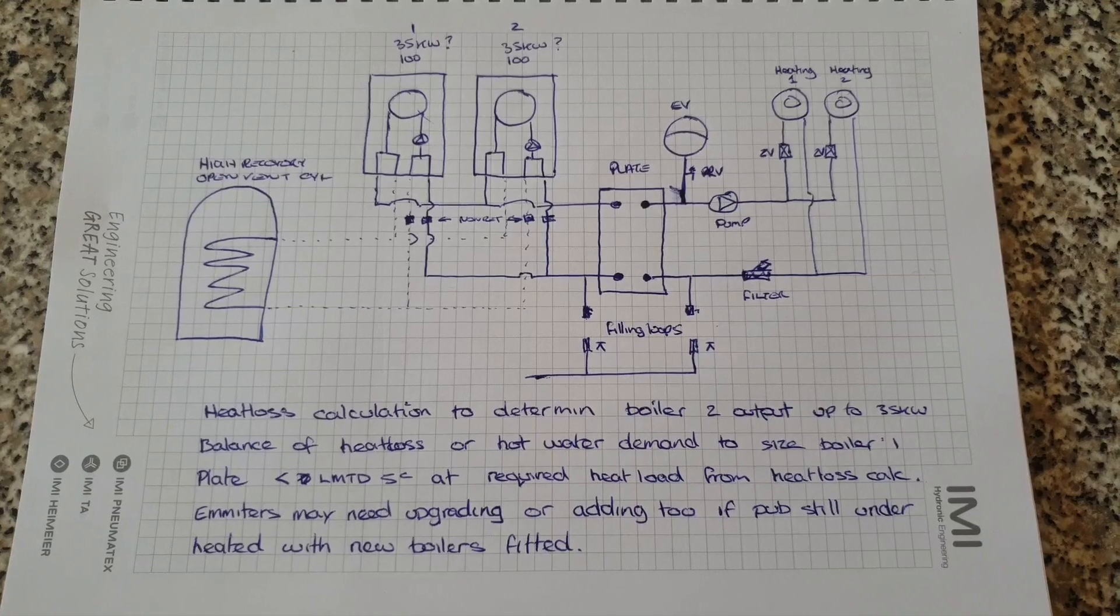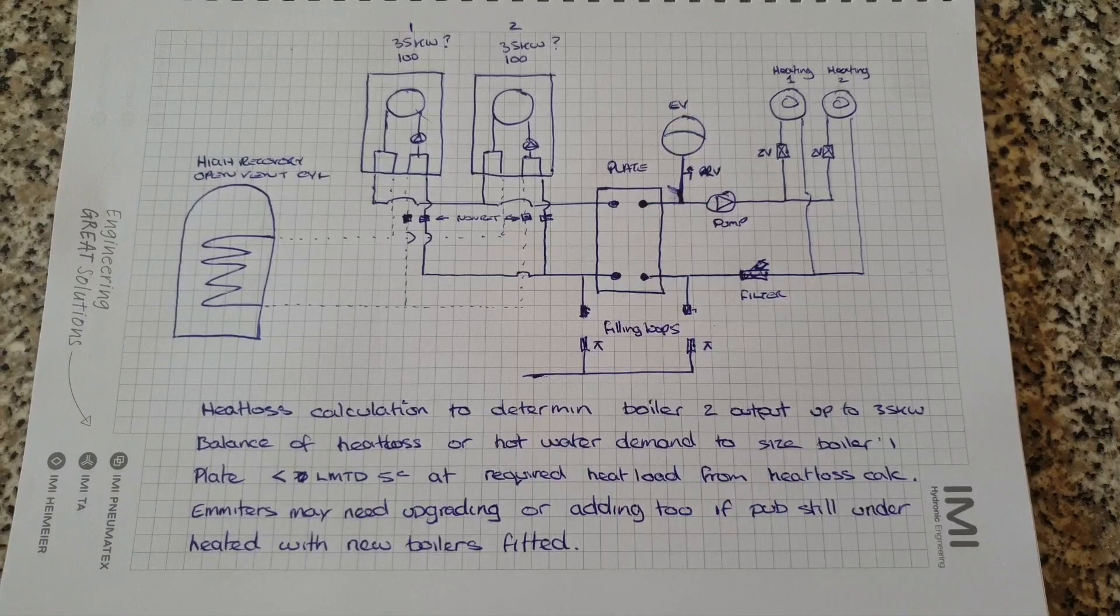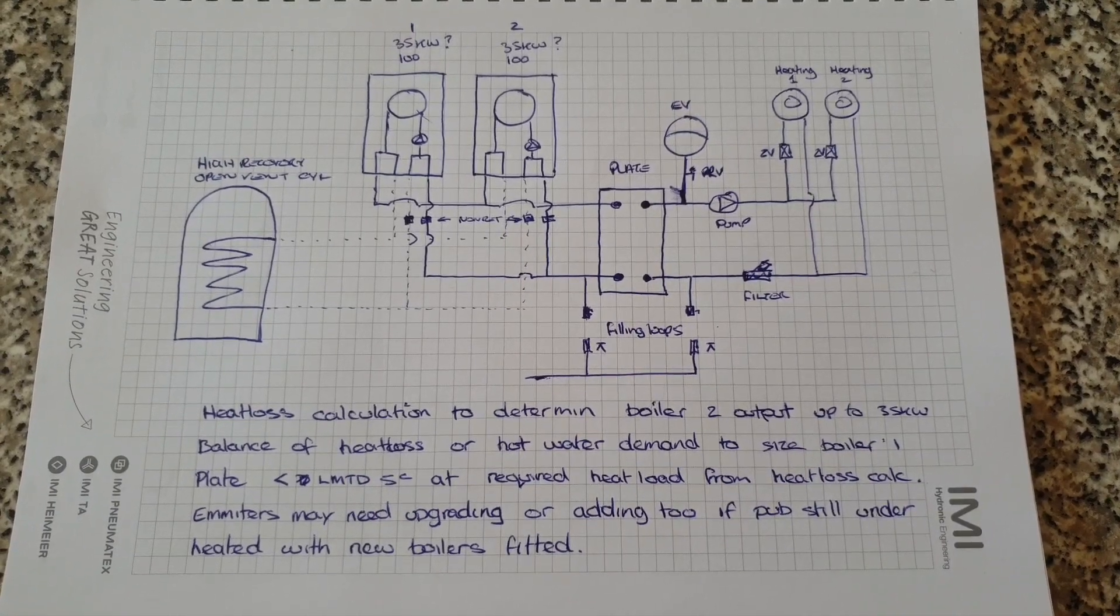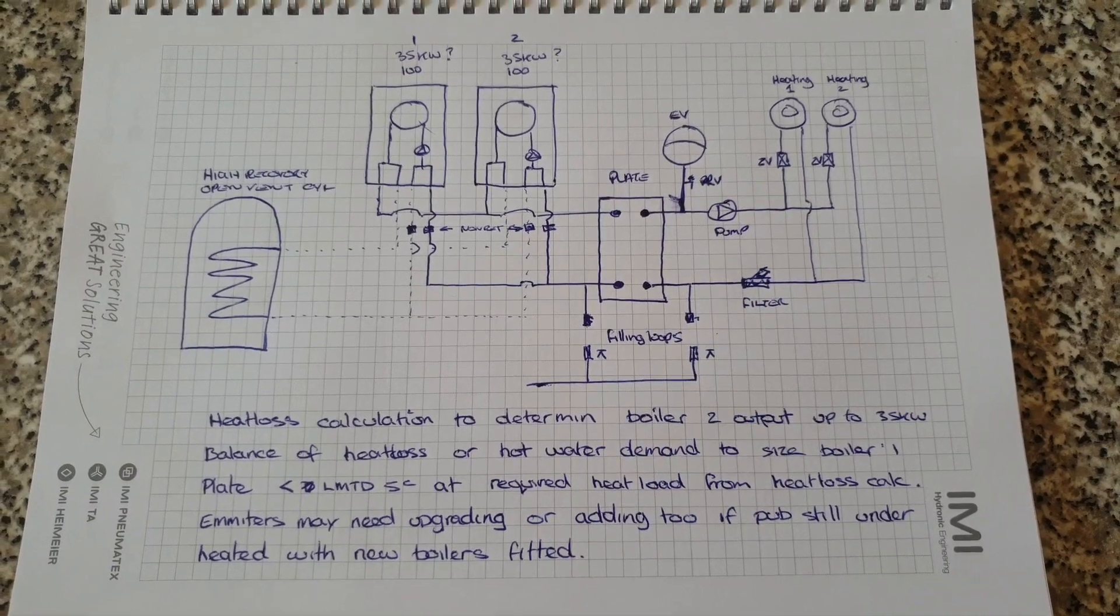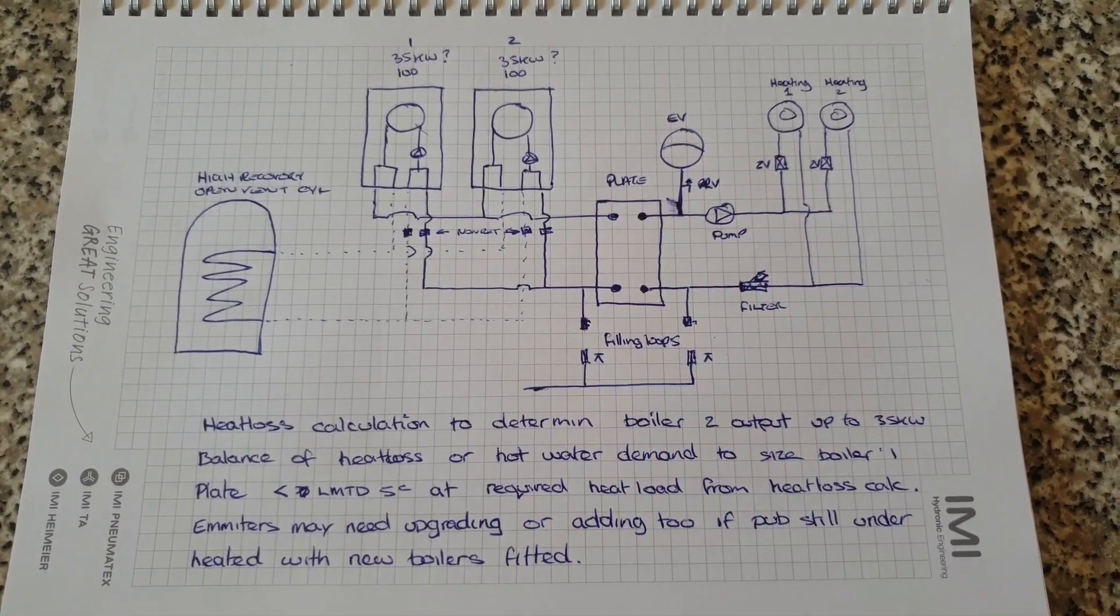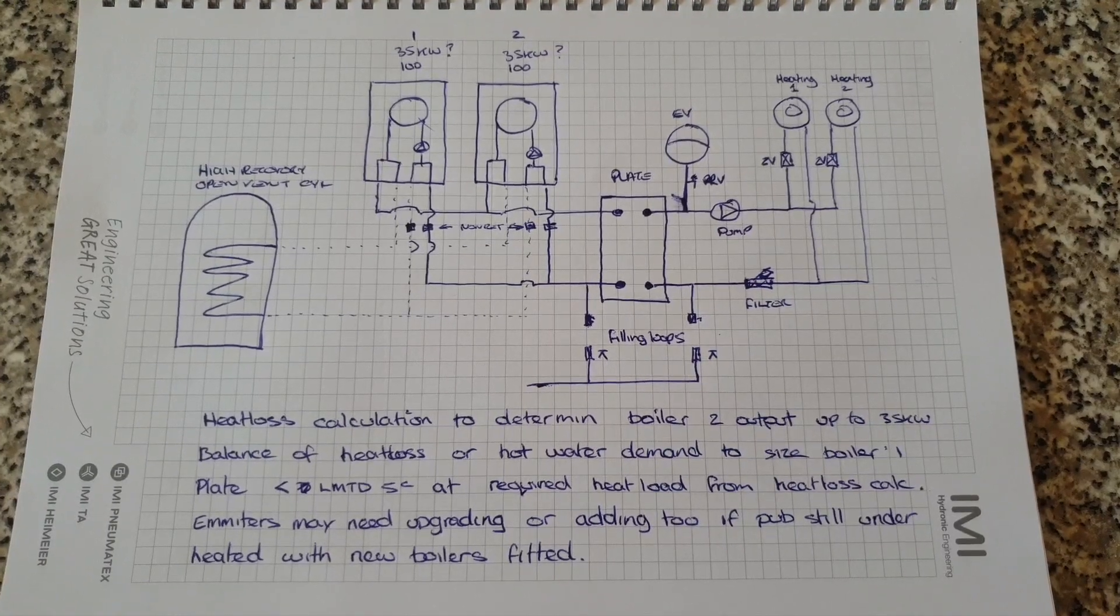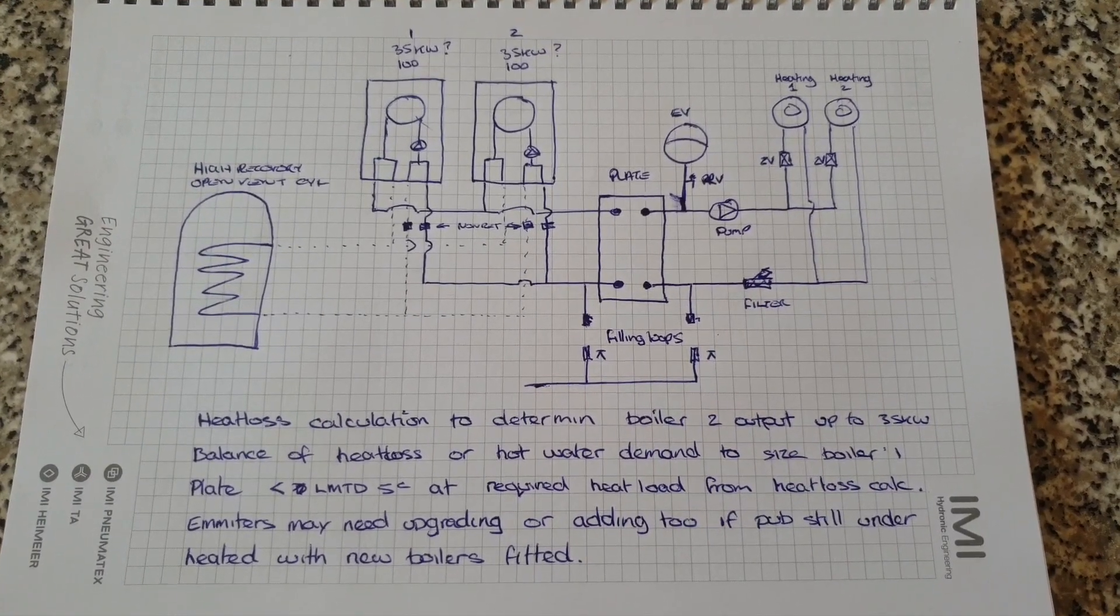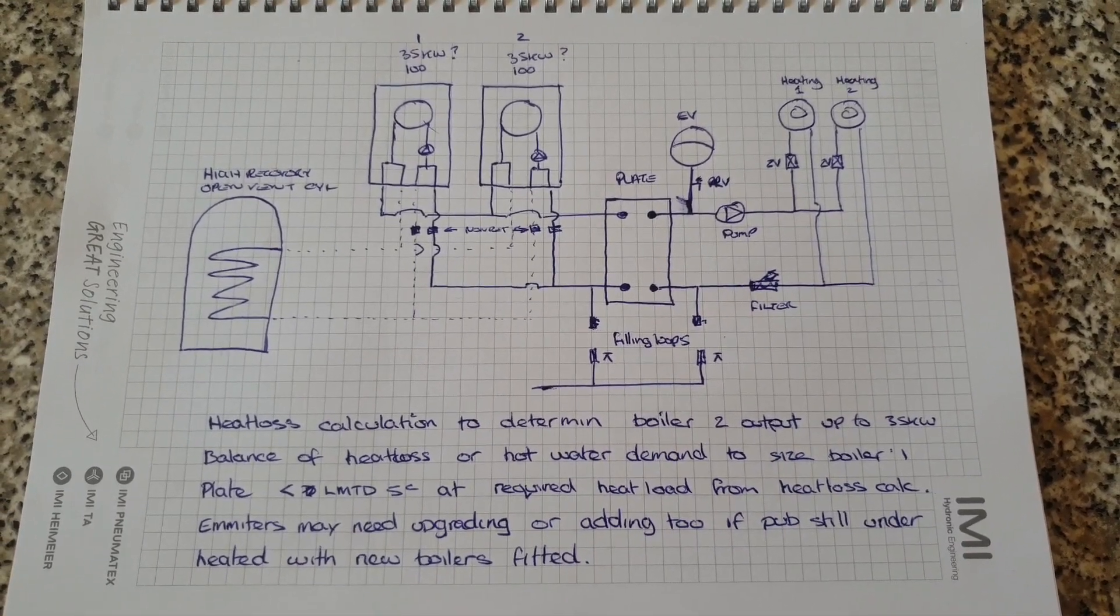So it's a really old system, it's got trench heating and an existing open vented cylinder. I don't see any point in changing from the open vented system, the hot water is working fine, but the cylinder is old. So renewing the cylinder with a high recovery or a really highly rated copper open vented cylinder will be fine.